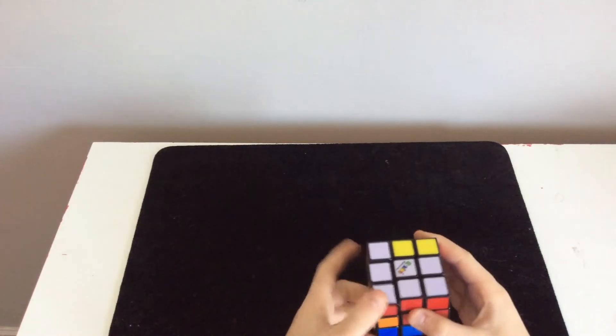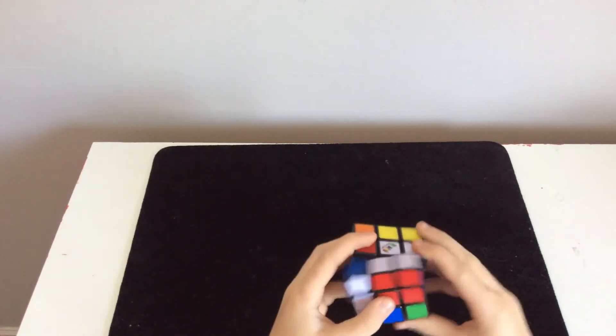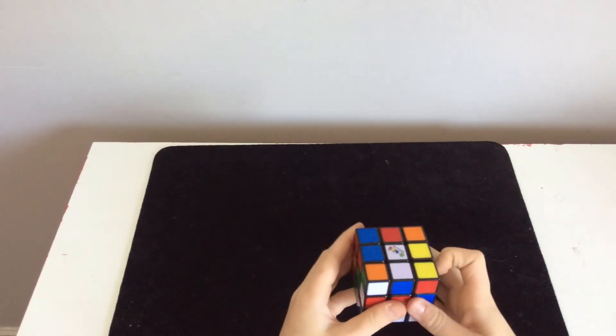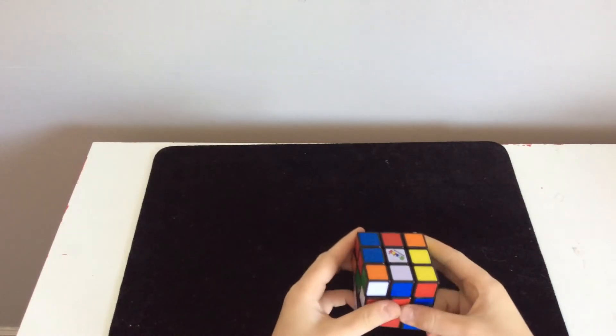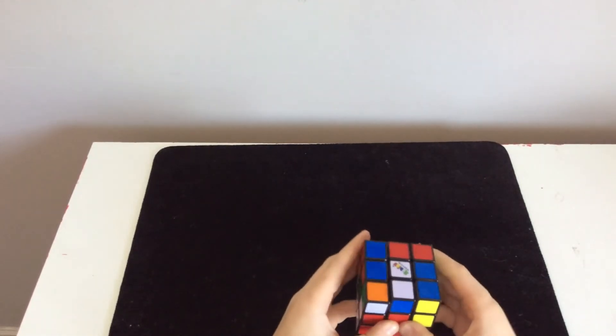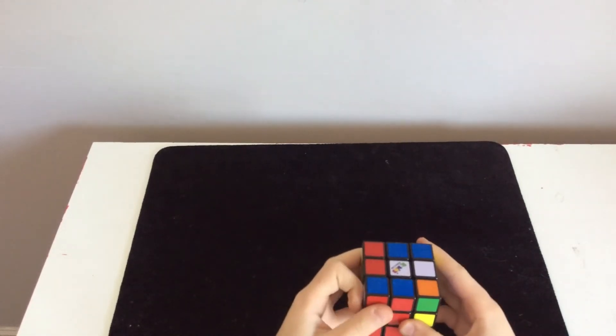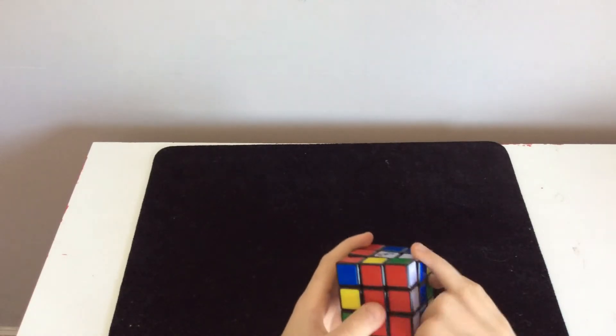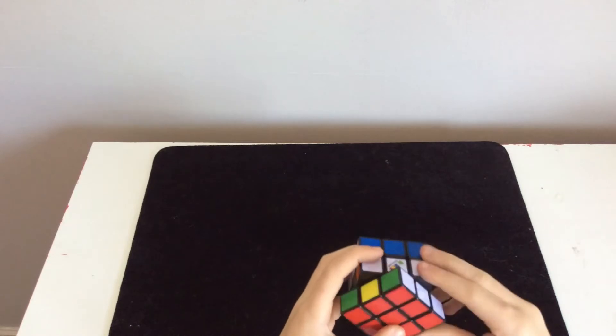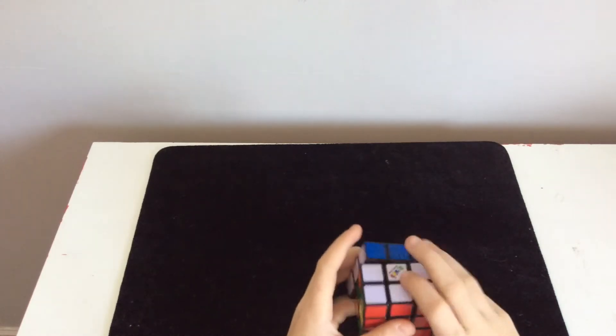Then you're going to do an L, then an F prime, then a U, then a D prime, then an R, then a U prime, an F2, an L, then an F inverted, and then a back inverted.